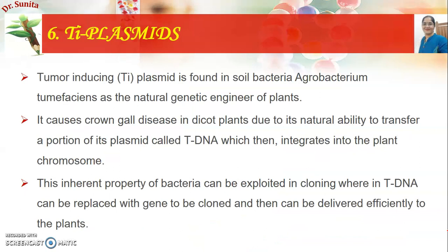Next are Ti plasmids, most famous for agrobacterium-mediated gene transfer. Ti plasmids are tumor-inducing plasmids found in the soil bacterium Agrobacterium, which causes infection in most dicot plants, leading to crown gall disease. Agrobacterium is considered a natural genetic engineer because it has the natural ability to transfer a portion of its Ti plasmid, called T-DNA, into the plant chromosomes. This ability makes Ti plasmids useful in genetic engineering for transferring desired genes.